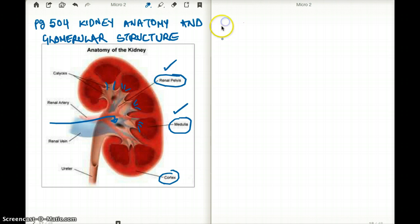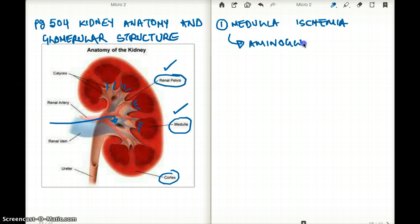The first thing we have to know is medulla ischemia. Medulla ischemia is very, very dangerous. And some of the things that can cause ischemia of the medulla is going to be aminoglycosides. And when there is ischemia of the medulla, it can present as shock. So that is the clinical correlation of the medulla.